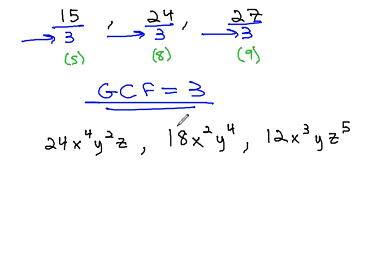This becomes even more interesting as we add the variables onto the expressions. In this second example, 24x to the 4th y squared z, 18x squared y to the 4th, and 12x cubed y z to the 5th. We want to know what's the largest thing we can divide all three of these by.